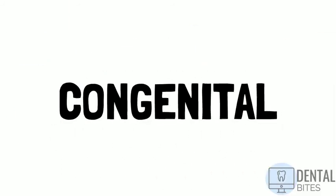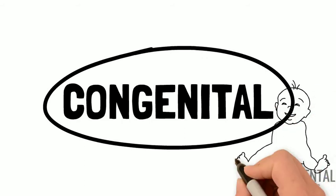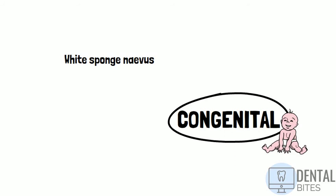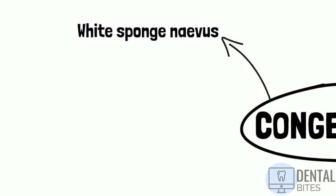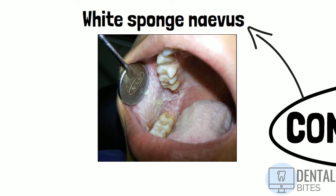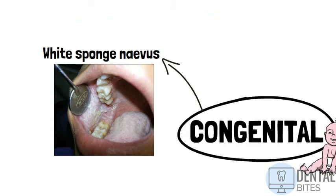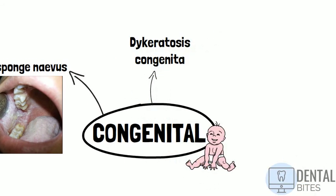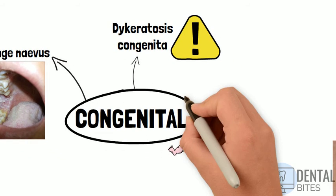Moving on to the congenital causes. White sponge nevus is a benign condition characterised by thickened folded white patches, most commonly affecting the buccal mucosa, and is due to mutations in the genes coding for keratin 4 and 13 proteins. Dyskeratosis congenita is an inherited syndrome in which patients undergo premature aging and are predisposed to malignancy. Patients may suffer from mucosal erosions and white patches which can be potentially malignant.